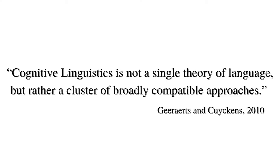A key aspect of Cognitive Linguistics is that it is not a single theory of language, but rather a cluster of broadly compatible approaches. For instance, we have cognitive grammar, construction grammar, and word grammar. In this video I'm focusing on semantics, but let me know in the comments below if you would like a video on the cognitive approaches to grammar in general. So let's look at a few of the key concepts in Cognitive Linguistics.